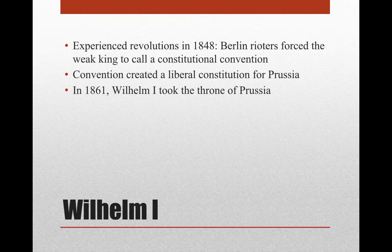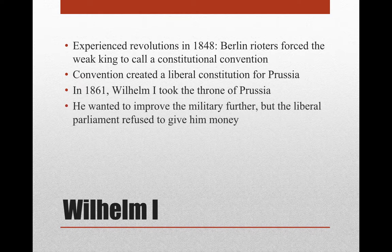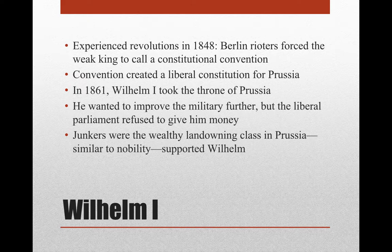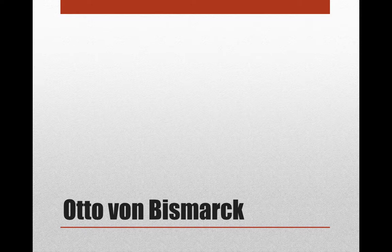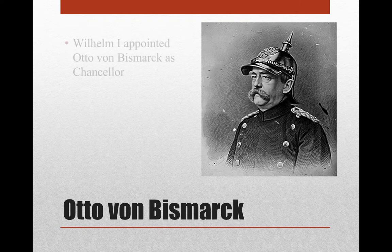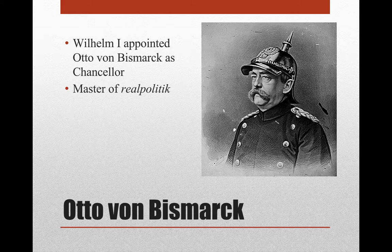In 1861, Wilhelm I takes the throne of Prussia. He wanted to make the military even better, but the parliament he had to work with refused to give him money. The Junkers — the wealthy nobility — supported Wilhelm and didn't like these liberal reforms. So Wilhelm I appointed a Junker named Otto von Bismarck as chancellor, or what we might think of as prime minister today. Bismarck was a master of what is called realpolitik, meaning he would do whatever it took to get the job done — he wasn't necessarily worried about being diplomatic or negotiating.